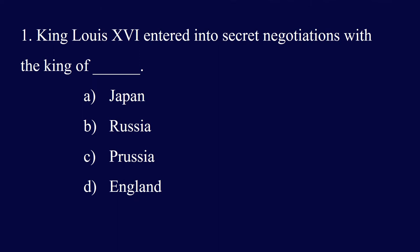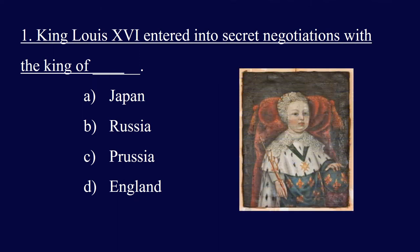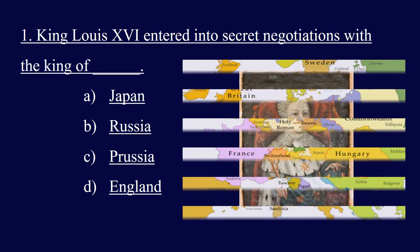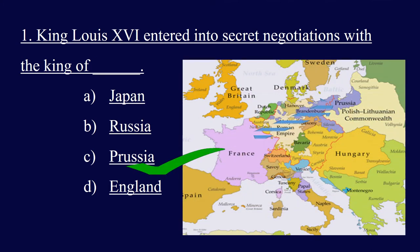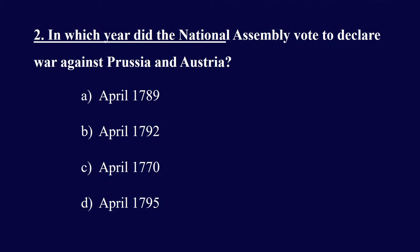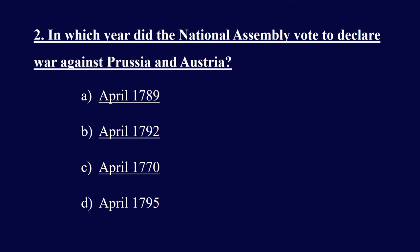Question one: King Louis 16 entered into secret negotiations with the king of — options: Japan, Russia, Prussia, or England. The right answer is Prussia. Louis 16 entered into secret negotiations with the king of Prussia. Question two: In which year did the National Assembly vote to declare war against Prussia and Austria? Options: April 1789, April 1792, April 1770, or April 1795. The right answer is B, April 1792.